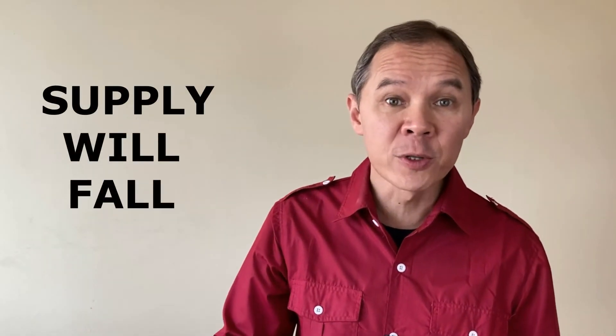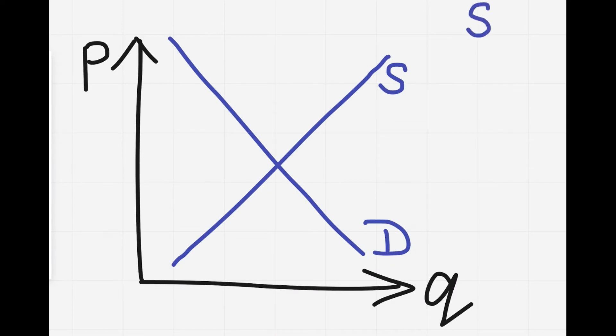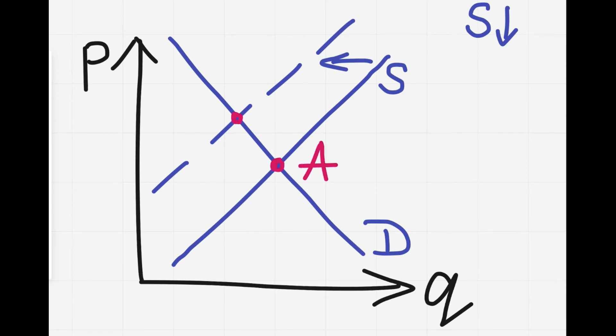Second question: how will supply change, and how should we shift the supply curve? If wages go up, companies pay more to the workers. If companies pay more to the workers, companies earn less. Higher wages mean smaller profits. And if companies pay higher wages and earn smaller profits, they will be less willing to produce the goods and services. On a supply and demand graph, supply will shift to the left. And as the market moves from point A to point B, the price rises and the quantity falls.